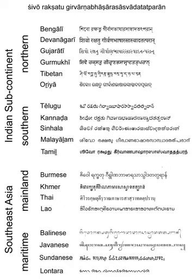An abugida, or alphasyllabary, is a segmental writing system in which consonant-vowel sequences are written as a unit; each unit is based on a consonant letter, and vowel notation is secondary.